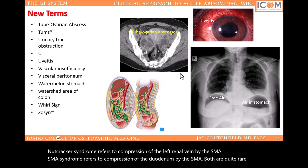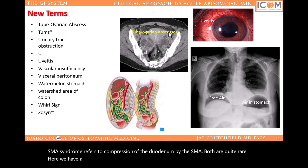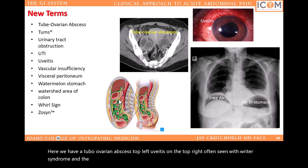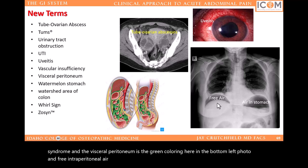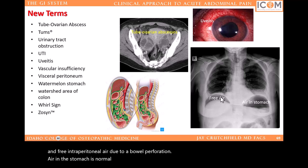Here we have a tubo-ovarian abscess on the top left, uveitis on the top right often seen with Reiter's syndrome, and the visceral peritoneum shown in green on the bottom left photo. And free intraperitoneal air due to a bowel perforation — air in the stomach is normal, but air over the liver is not normal. This is free air and suggests a perforated bowel.